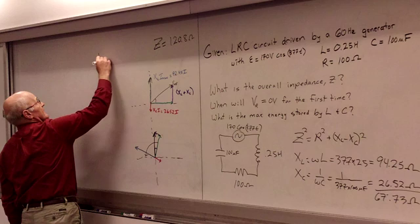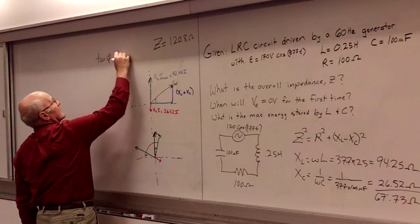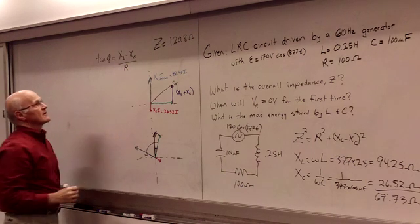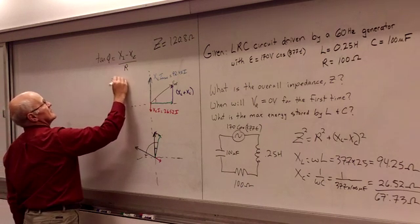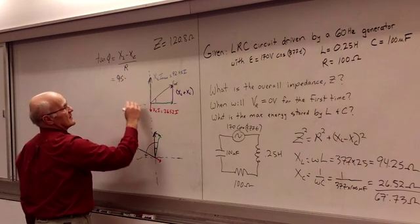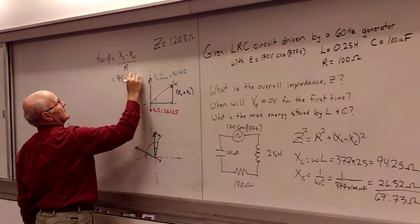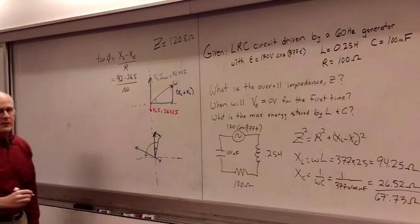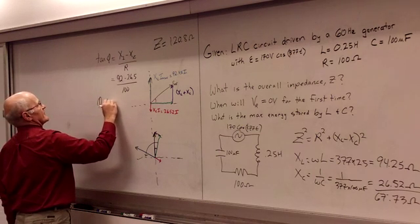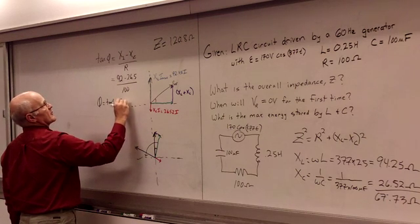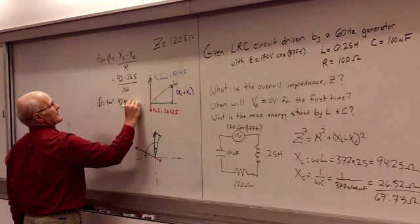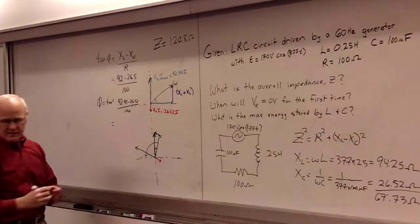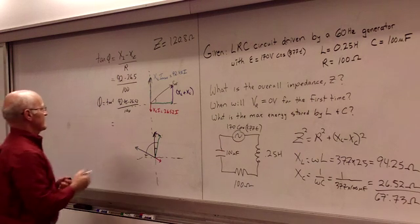So what's important for answering this question is we have to have that phase angle. We know that tangent of phase angle is going to be given by our XL minus XC, and I'll use the negative sign this time for the normal convention, and dividing that by R. So when we plug in for this, we get our 92.45 minus our 26.52, and we're going to divide that by 100. Then we solve for the phase angle.